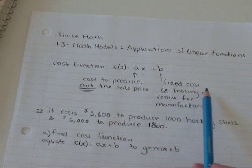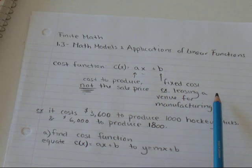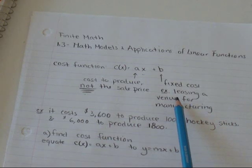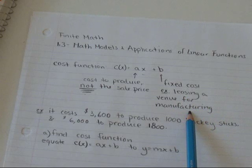And b is the fixed cost, which isn't affected by how many you make. It's something like, for example, leasing a space in which to do your manufacturing.